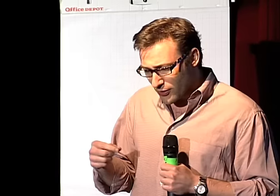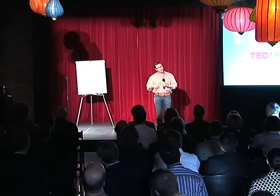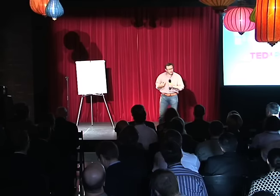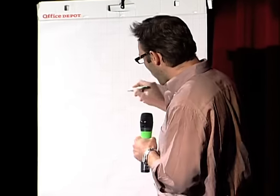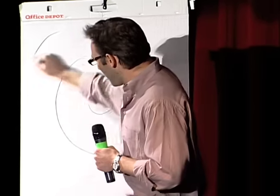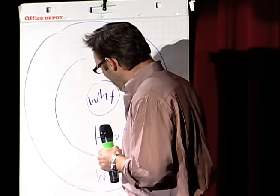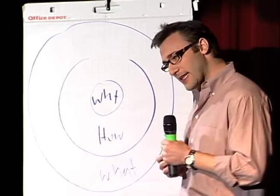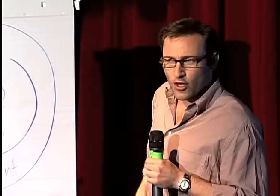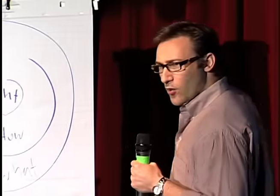As it turns out, there's a pattern. As it turns out, all the great and inspiring leaders and organizations in the world, whether it's Apple or Martin Luther King or the Wright brothers, they all think, act, and communicate the exact same way. And it's the complete opposite to everyone else. All I did was codify it. And it's probably the world's simplest idea. I call it the golden circle.